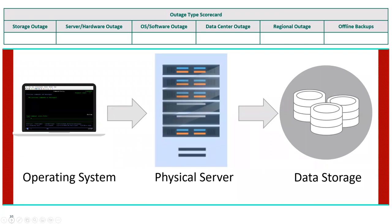As we start talking about RTO and RPO, we have to realize our data center is a complex thing with many pieces. As we talk about all the different technologies today, we'll show you what types of outages these different technologies protect you against. The first type is a storage outage — things like your disks where your data is stored.